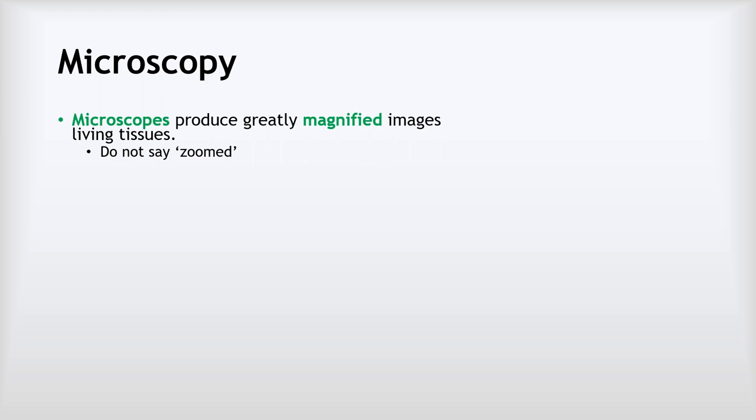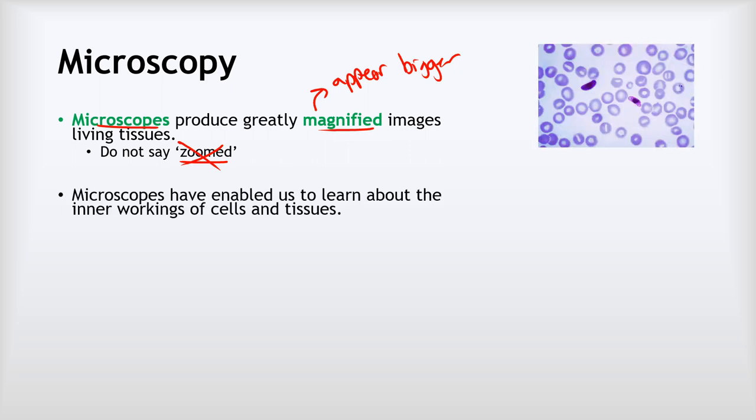Microscopy is using microscopes to produce greatly magnified images of living tissues. This word magnified means that it makes living tissues appear bigger than they really are. We've got to be careful about our language here. It's tempting to say that microscopes zoom in on things, but we can't use that word 'zoomed' because it is not a scientific word, so make sure we say magnified or talk about magnification. Microscopes have enabled us to learn about the inner workings of cells and tissues and they've contributed hugely to our understanding of biology because all of our cells and the things that they contain are too small to be seen with a naked eye.